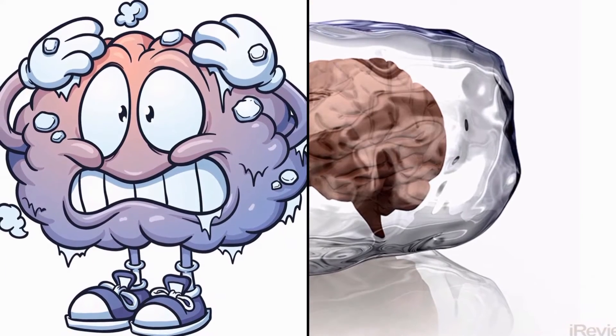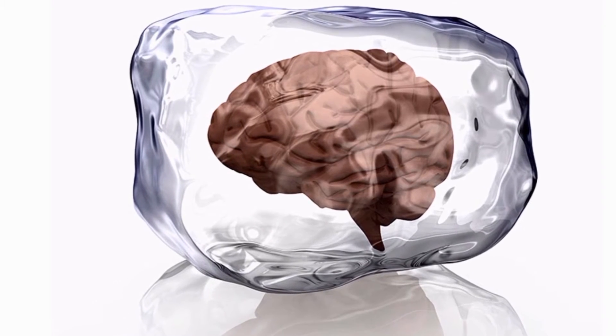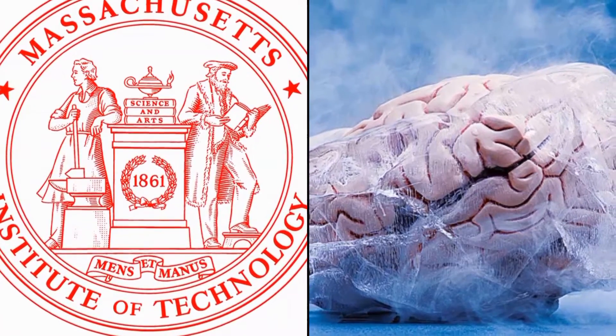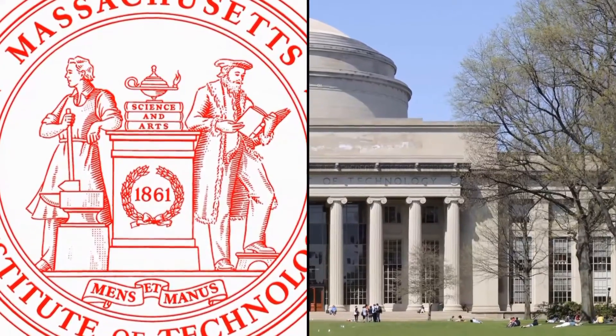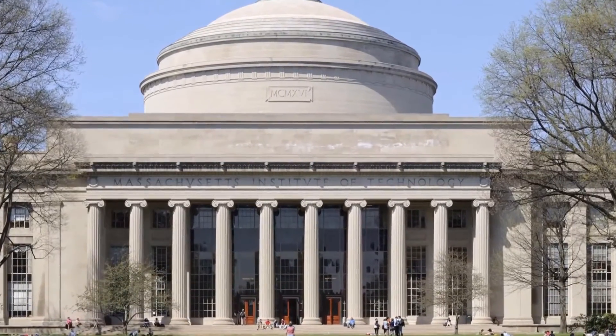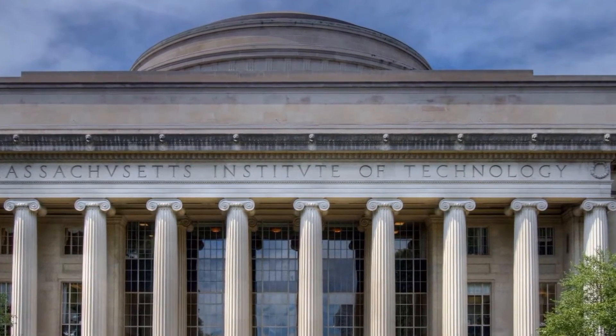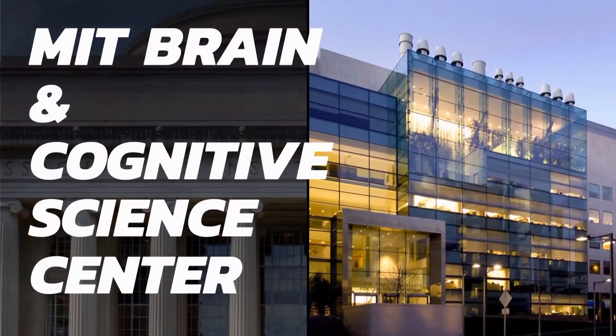Now, the article goes on to say that they achieve this by filling the vascular system of the brain with chemicals that are designed to stop the decaying process, and then they froze it to negative 135 degrees Celsius. It also says that when the brain was warmed, the scientists found that the majority of its cell membranes, synapses, structures and other things were still intact and ready to function.